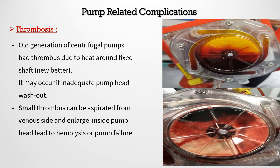The third pump-related complication is thrombosis. Centrifuge pump head thrombus is due to heat around the fixed shaft. It may also occur with inadequate pump head washout, allowing blood to retain inside the pump head. Small thrombi can be aspirated by the pump from the venous side; larger ones accumulate inside the pump head. Both can lead to hemolysis or pump failure. These two pictures show different pump thrombosis cases from my unit — one presented with complete pump failure, the other with hemolysis in the circuit.